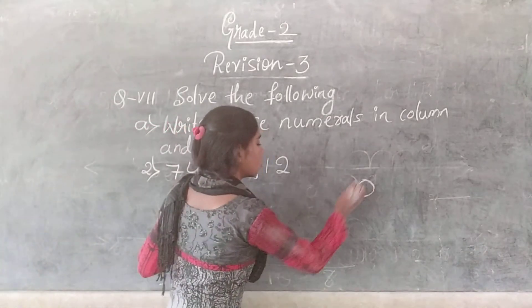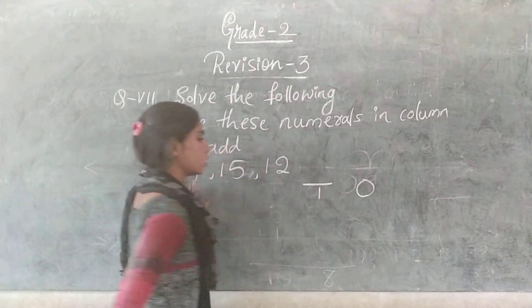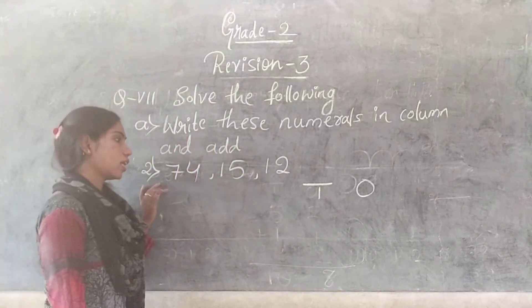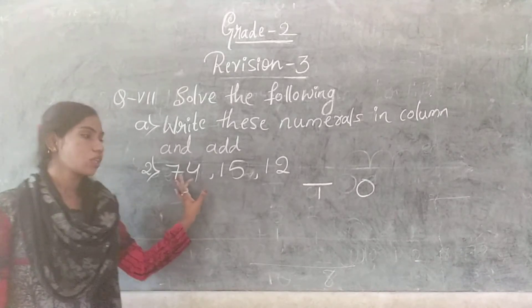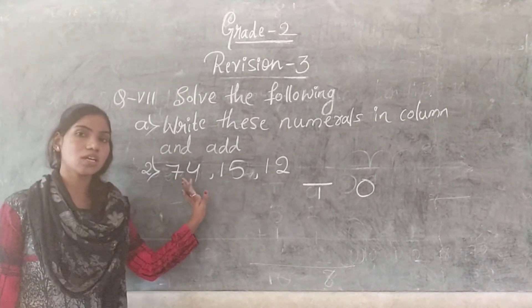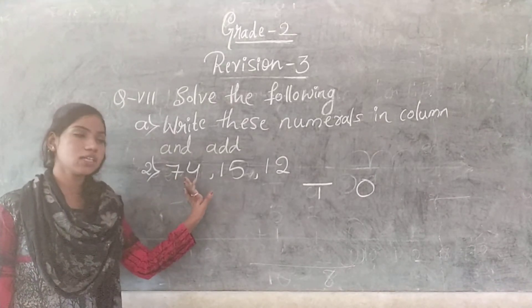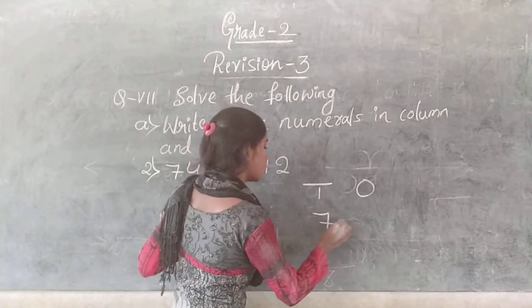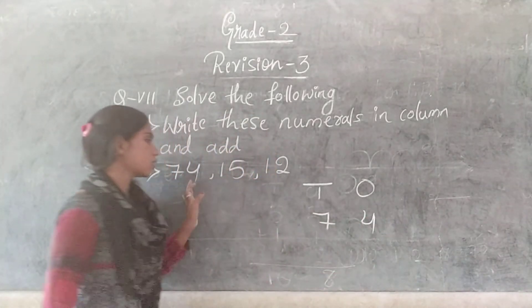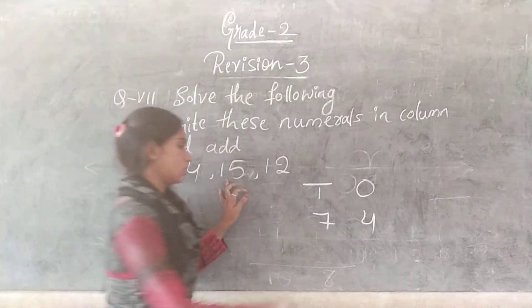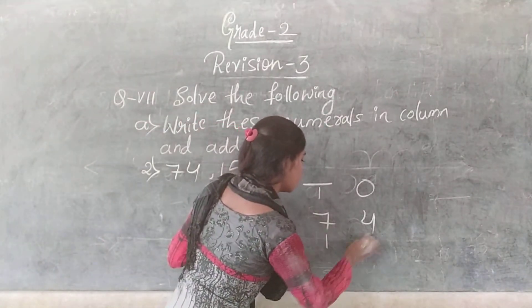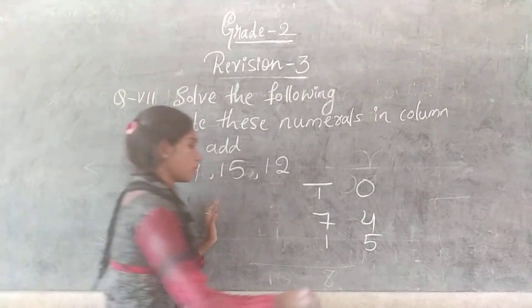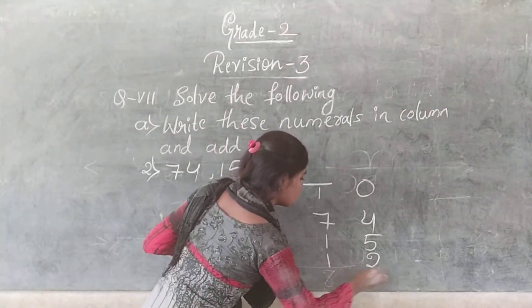The columns are 1s and 10s. Add the numbers one below the other: the first number is 74, the second one is 15, and the third one is 12.